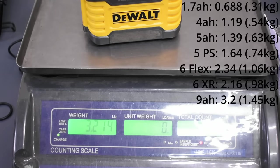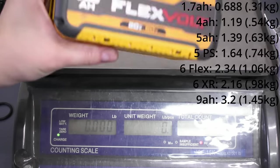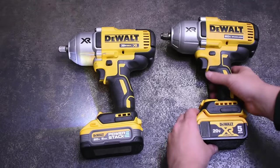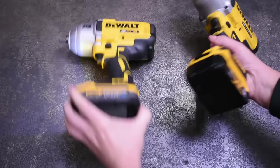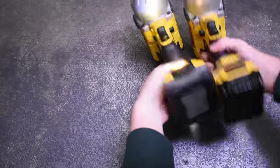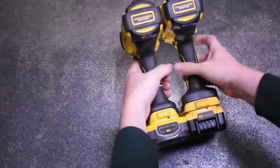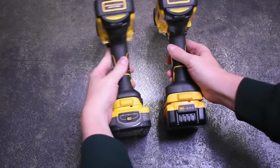DeWalt sure focused on the size and weight a lot of the original Power Stack but pretty much never even mentioned it being only 1.7 amp hours. This 5 amp hour is a bit of the opposite, all about it being the big 5.0 that we're all used to using, but nothing about its relative size or weight. So what's left?